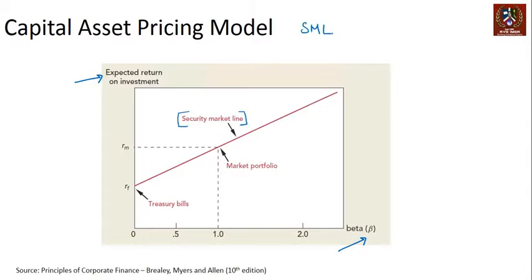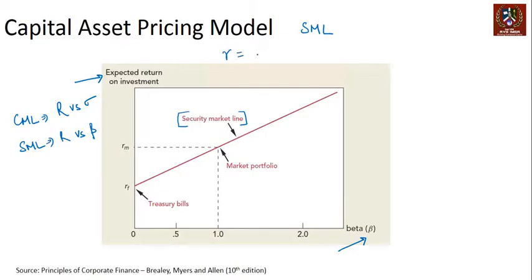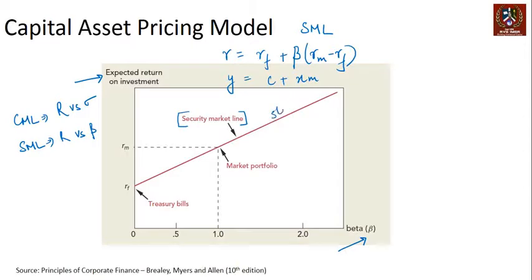Note that the CML was return versus sigma, while the SML is return versus beta — that's the key difference. The equation is R = RF + beta × (RM − RF). Writing it in slope-intercept form: Y = C + MX, where M is the slope, which equals RM minus RF. So the slope of the SML is the market risk premium, RM minus RF.